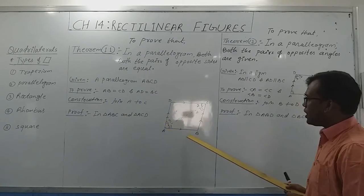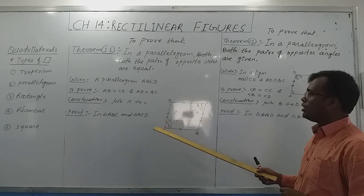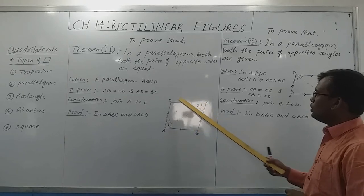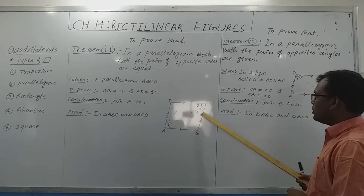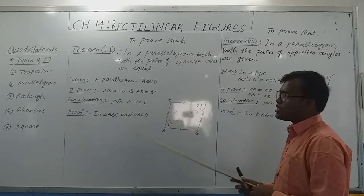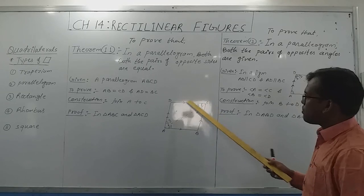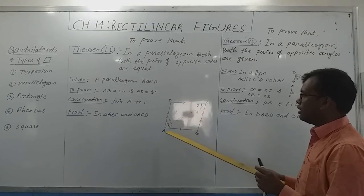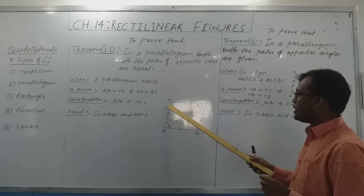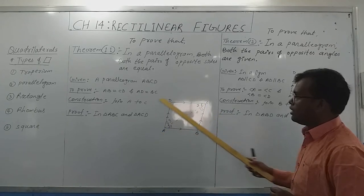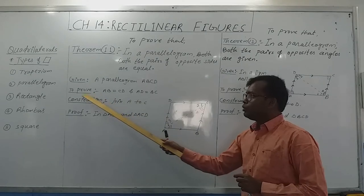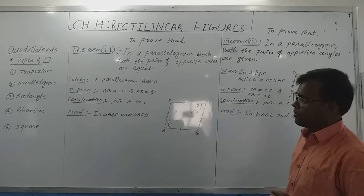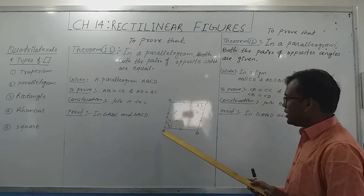We have to prove this for a parallelogram ABCD. If ABCD is a parallelogram, that means opposite sides will be parallel. So AB is parallel to CD and AD is parallel to BC. Given: parallelogram ABCD. To prove: AB equal to CD and AD equal to BC. Construction: join A to C.